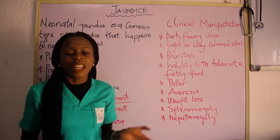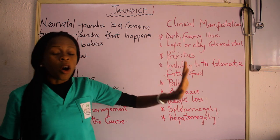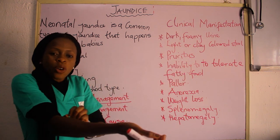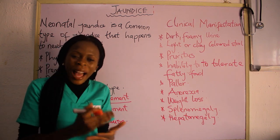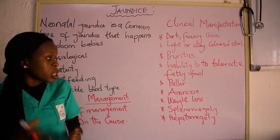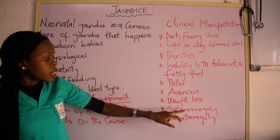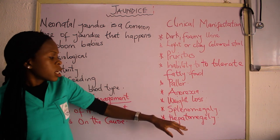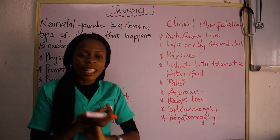The general clinical manifestations of jaundice include: dark foaming urine, light or clay-colored stool, pruritus — a sensation to scratch the body. There is inability to tolerate fatty foods, since the function of bile is to emulsify fats, and obstruction prevents bile from reaching the duodenum. Other signs include pallor, anorexia, loss of appetite, weight loss, splenomegaly, and hepatomegaly. And of course, the classic sign — yellowish discoloration of the skin and conjunctiva.